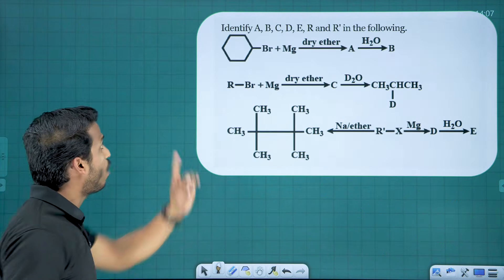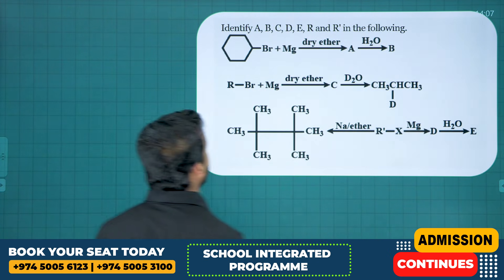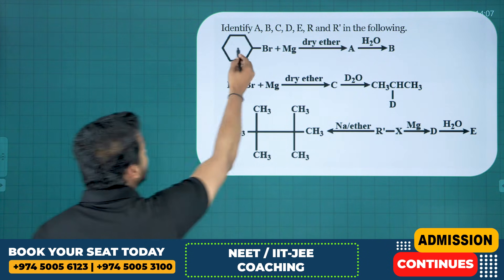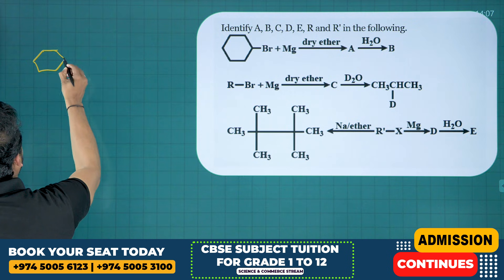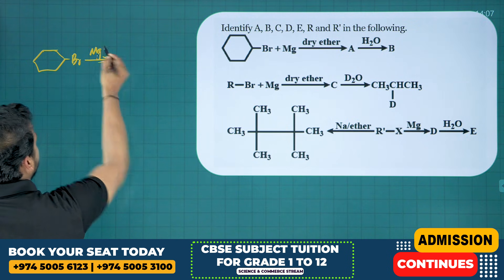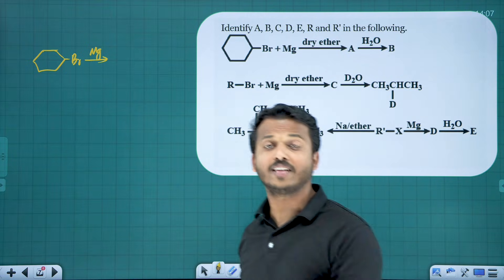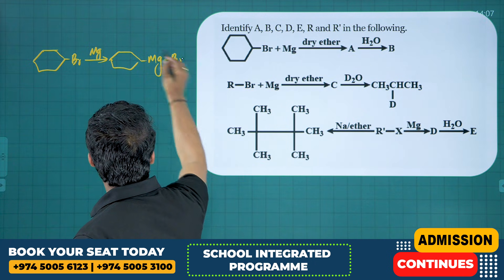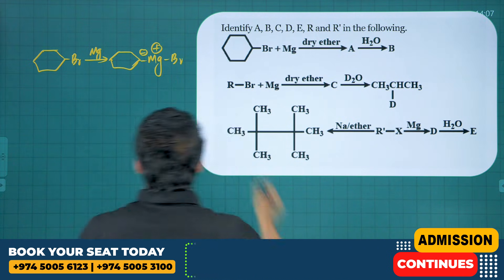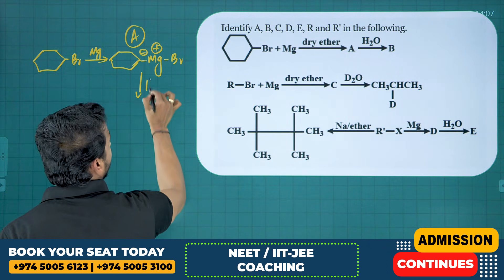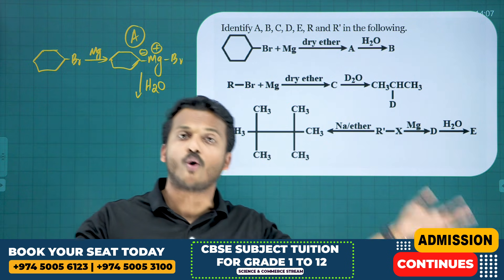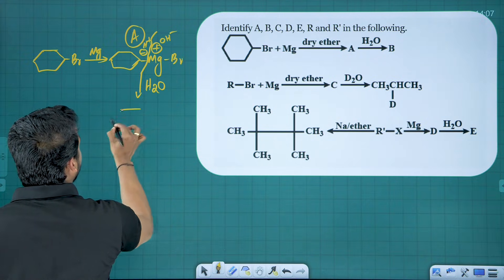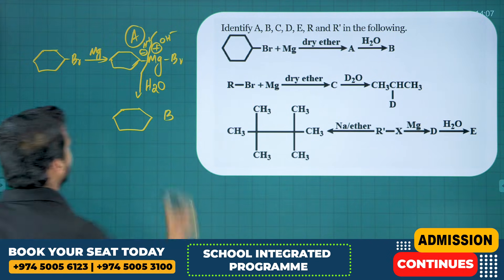Here is an NCERT important question with many compounds to find: A, B, C, D, E, R, and R'. First reaction: cyclohexyl bromide reacts with Mg in dry ether — haloalkane with Mg gives Grignard reagent — compound A is cyclohexyl MgBr. Second step: adding water (which contains H⁺ and OH⁻) — H⁺ goes to the carbanion, OH⁻ goes to Mg — giving compound B: cyclohexane.